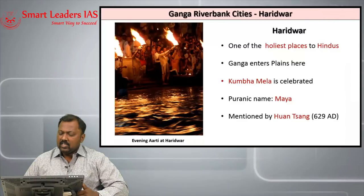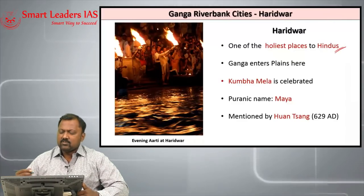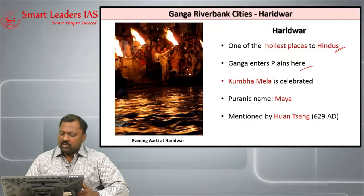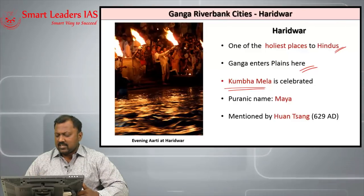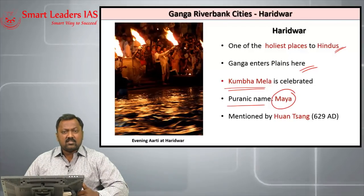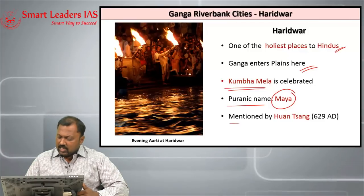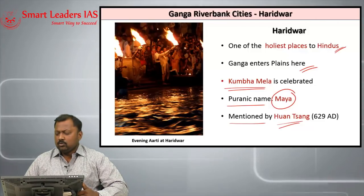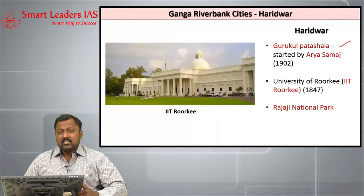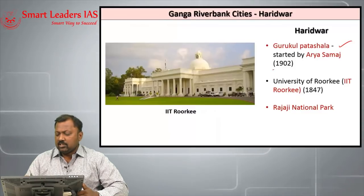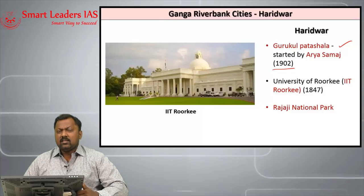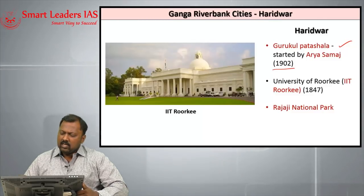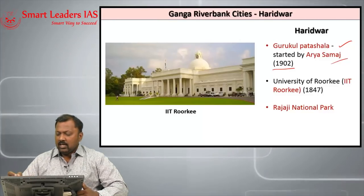Haridwar is one of the holiest places associated with Hindu religion. Ganga enters the plains at Haridwar, and Haridwar is also a place of Kumbha Mela. The Puranic name of Haridwar is Maya, a question already asked in UPSC. Haridwar is mentioned by Xuanzang, the Chinese pilgrim who visited India during the time of Harshavardhana in the 6th and 7th century AD. Gurukul Pathshala was started by the Arya Samaj here in 1902. The Arya Samaj, founded in 1875, also started the Dayananda Anglo-Vedic school in Lahore in 1886.